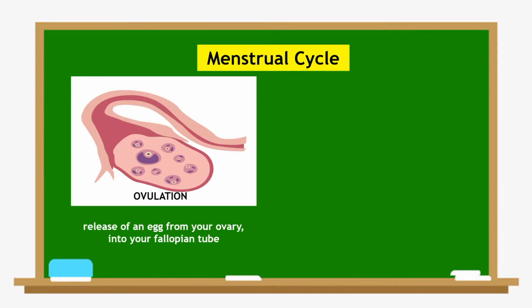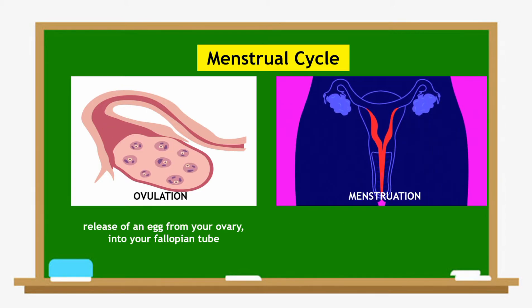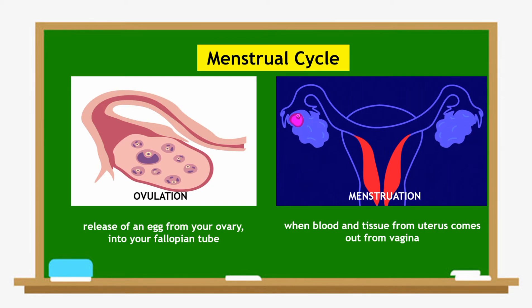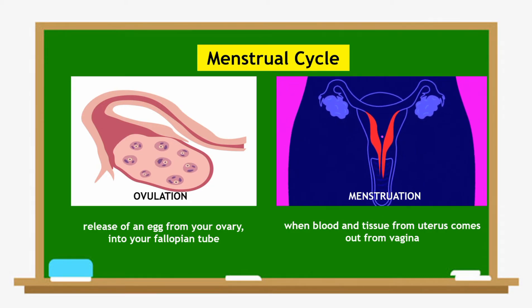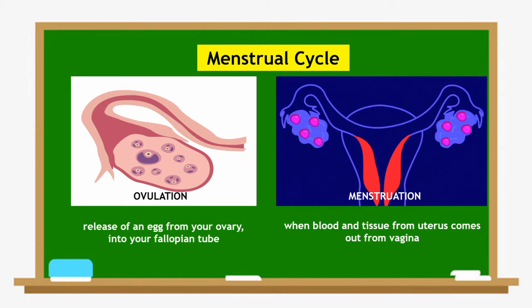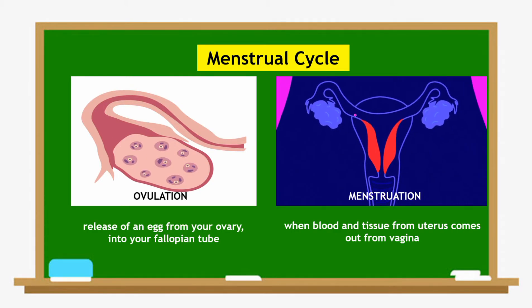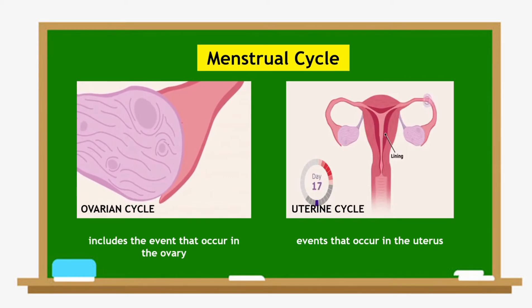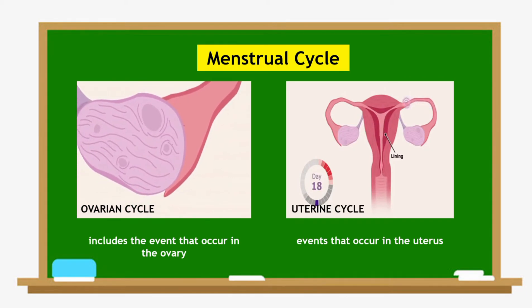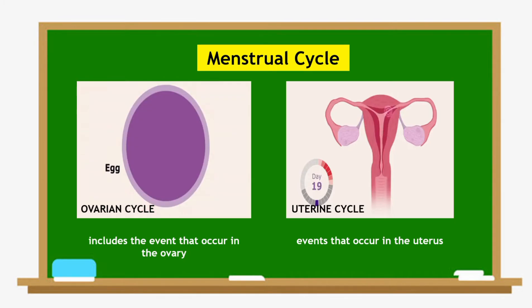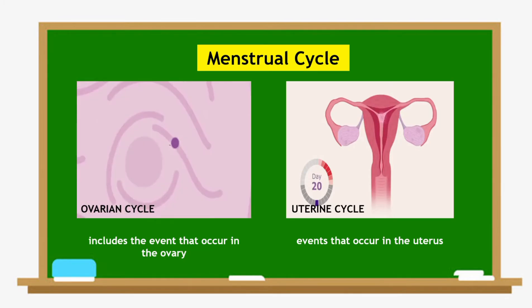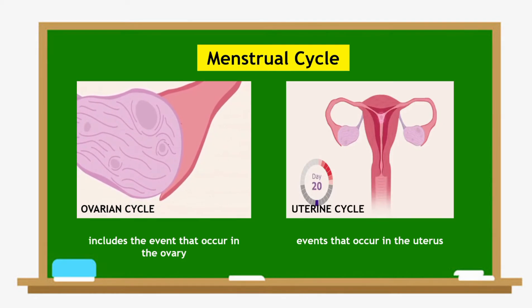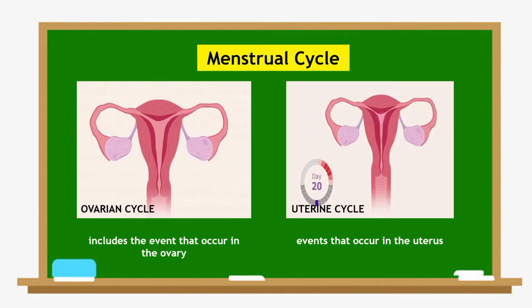Ovulation is part of the menstrual cycle which occurs each month in a sexually mature female. Menstruation is the process by which blood and other tissues are shed from the uterus and leave the body through the vagina. The menstrual cycle is divided into two cycles: the ovarian cycle includes all events that occur in the ovary like ovulation, and the uterine cycle includes all events that occur in the uterus like menstruation.